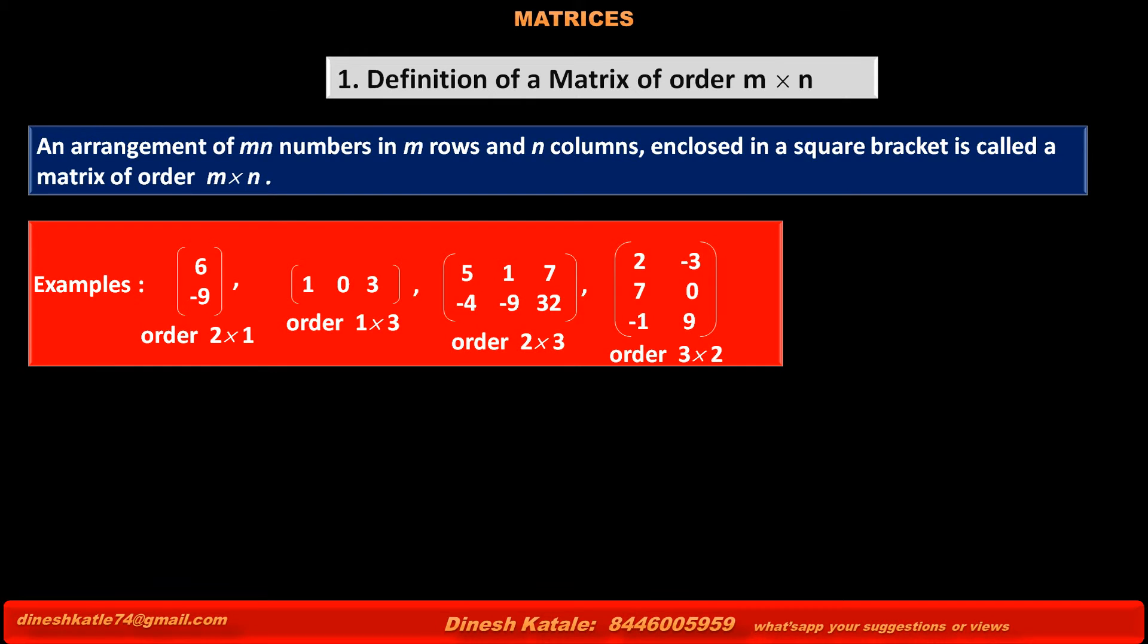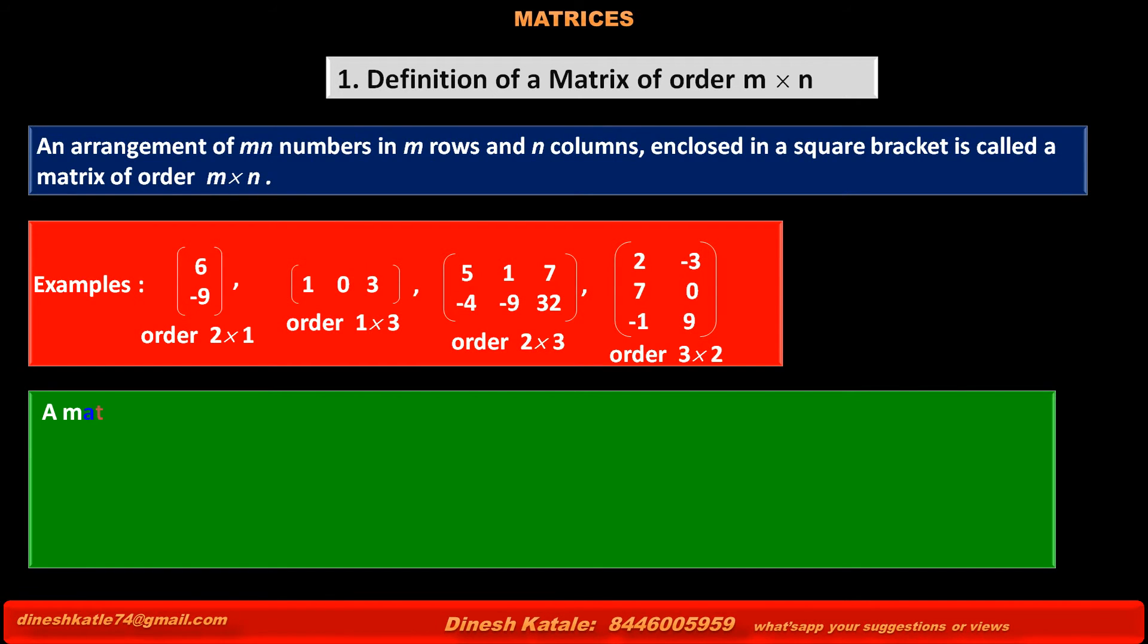So its order is 3 into 2. A matrix of order is written in short as capital A equals, in square brackets, small letter aij, after bracket M into N, where aij denotes the element of matrix A in the i-th row and j-th column.